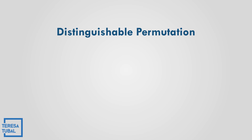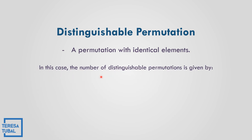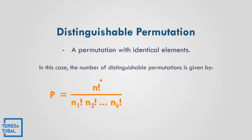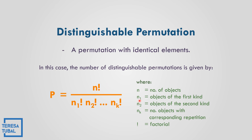What is distinguishable permutation? It is a permutation with identical elements. The number of distinguishable permutations is given by the formula P equals n factorial over n-sub-1 factorial times n-sub-2 factorial and so on. Where n is the total number of objects, n-sub-1 is the number of identical objects of the first kind, n-sub-2 is objects of the second kind that are identical, n-sub-k is the number of objects with corresponding repetition, and the exclamation point means factorial.